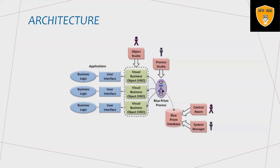In Blue Prism technology, users are free to start a process through a manual approach — it can be started and stopped at any time using the configuration options. This is the complete architecture of Blue Prism, which is simple enough to use and adopt.